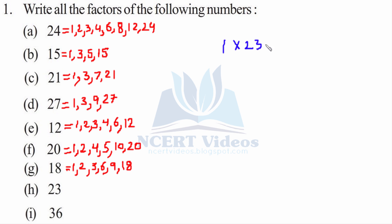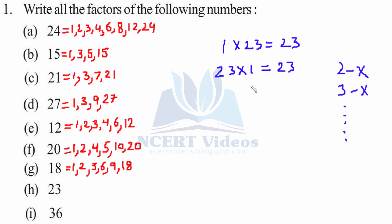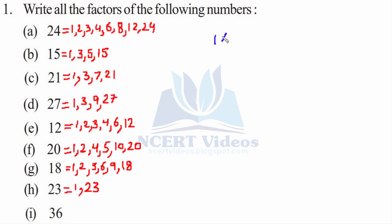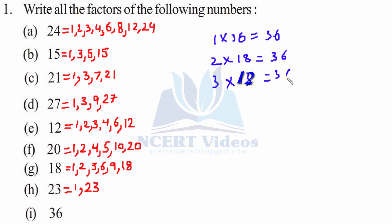Now 23: 1 into 23 gives you 23. 2 is not a factor. 3 is not as well. 23 times 1 is 23. So any number which has only 1 and itself as factors is called a prime number. For 36: 36 has many factors. So 1 times 36, 2 times 18, 3 times 12 is 36, and 4 nines are 36 again. 5 is not a factor.